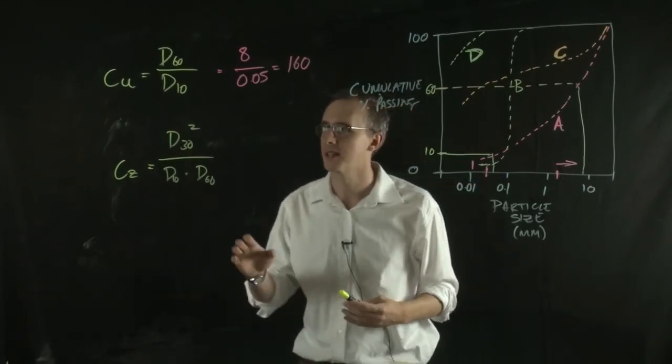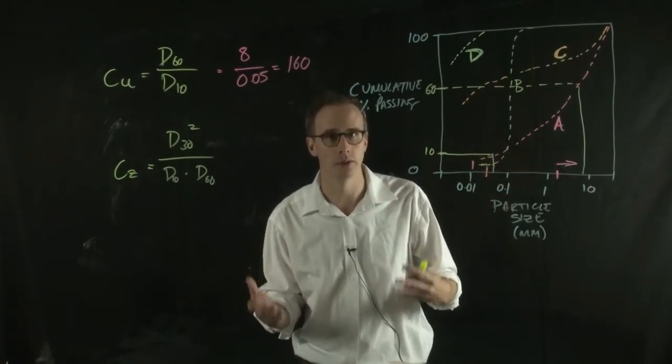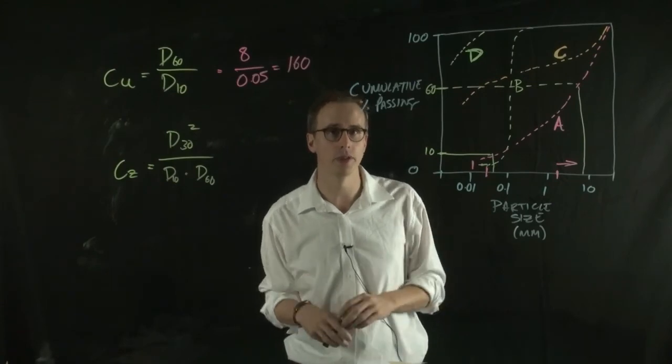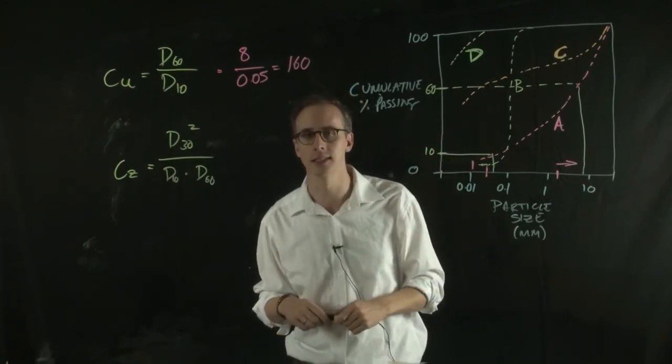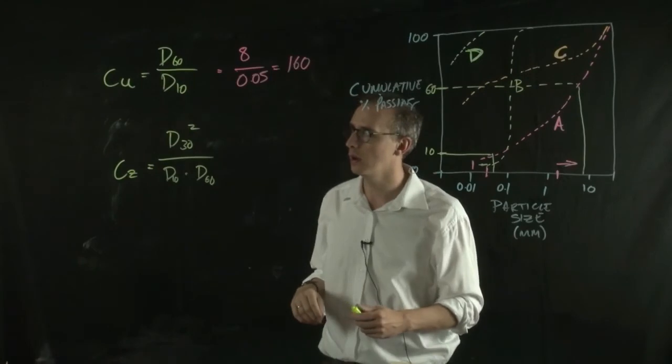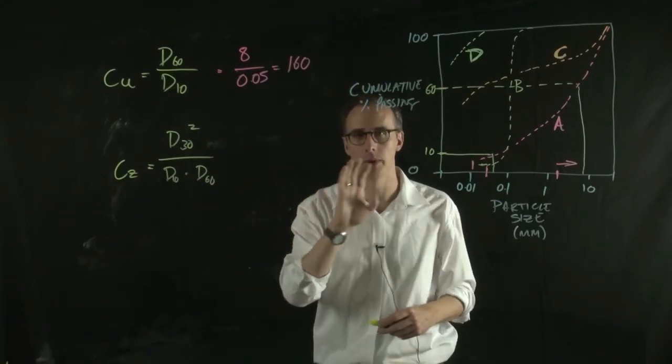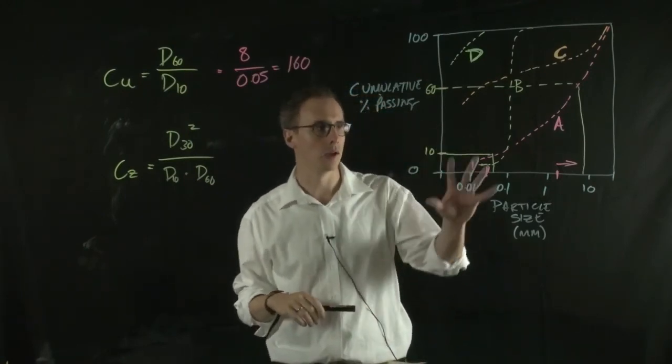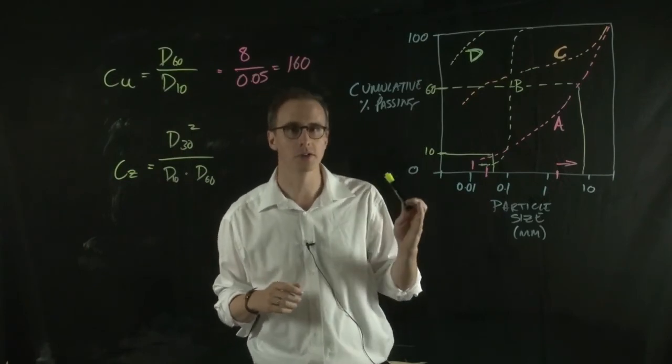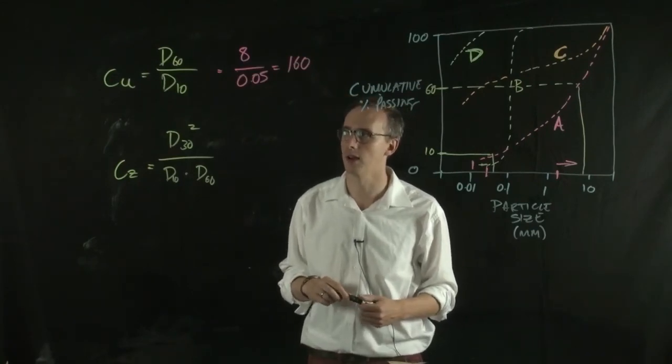A word of warning though is that small changes in your readings here, and depending on if you're drawing this graph by hand or analyzing it through computer software, it can give you slightly different readings on your d60s, d10s and d30s. That can have quite a pronounced impact on the results of your coefficient of uniformity or coefficient of curvature. So I suggest that you be careful about the numbers you're putting into these equations, and also round up and try and use a bit of common sense about interpreting these values.